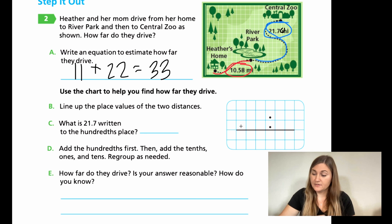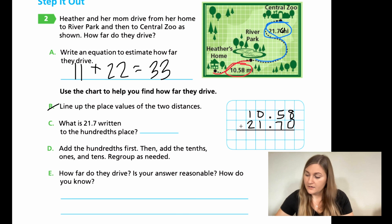Now for B, it says line up the place values of the two decimals. So in front of my decimal for the first one, I have a 10. So I need to make sure that my one and my zero have their own columns. And then I have a five and an eight. And then I have 21.7. That's just how the number shows us. And I'll show you in a second, how to do that. So that was B for C. It says, what is 21.7 written to the hundreds place? That's really what I told you to do when estimating. So I added a zero at the end. So that would be 21.70 because this is the hundreds place.